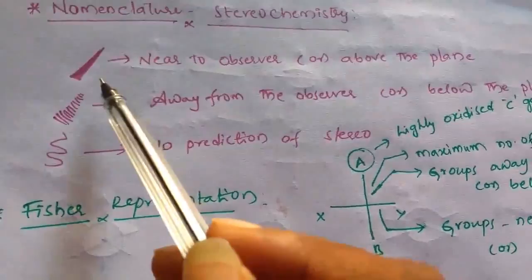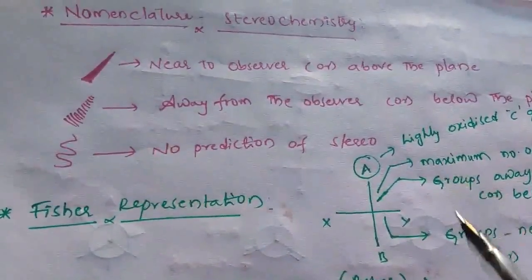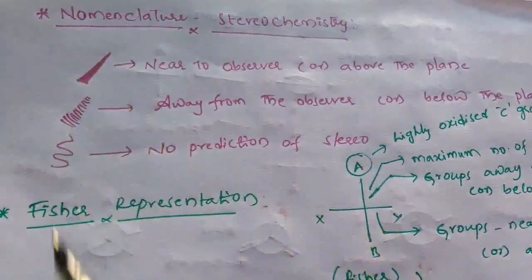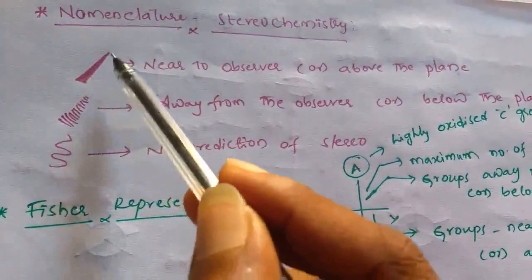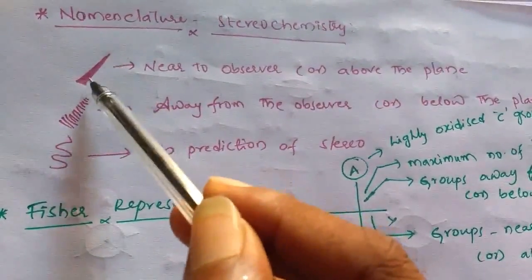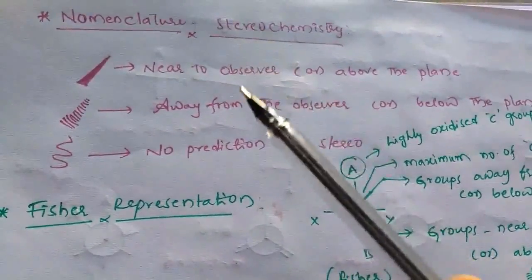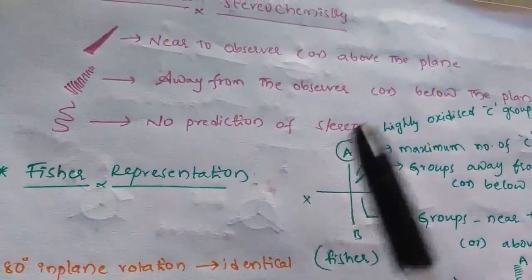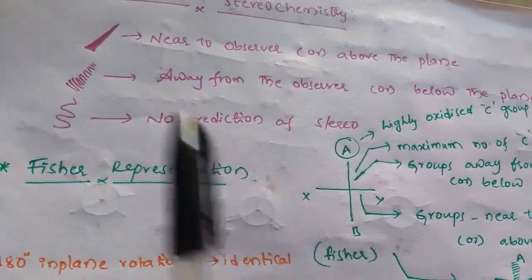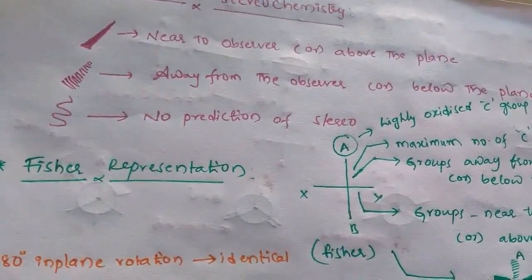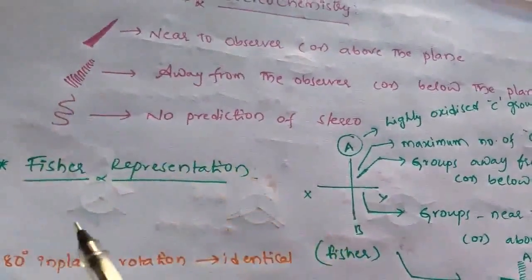As part of the basics of stereochemistry: if we observe a thick line, thick bar, or thick triangle on a structure, that means the particular group attached to that thick line or bar or triangle is in the upward position — that is, it is nearer to the observer or above the plane of the paper. That is indicated by the thick bond.